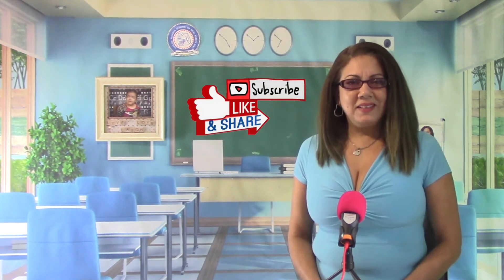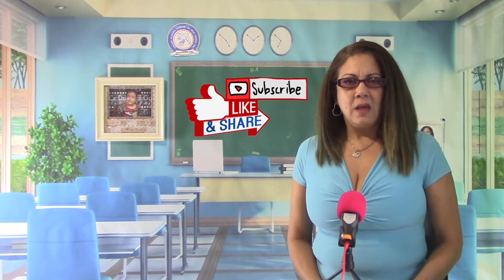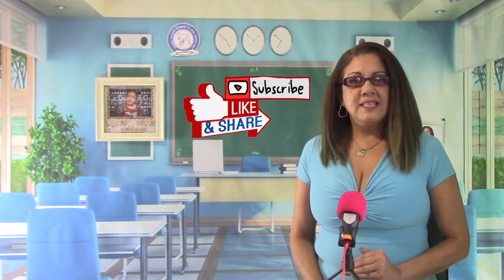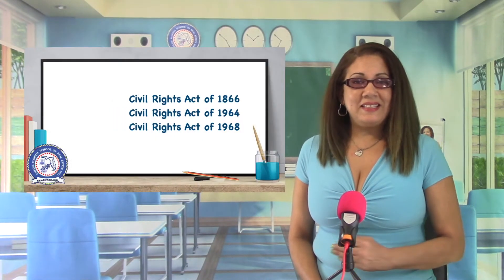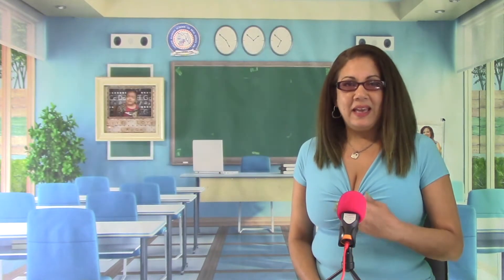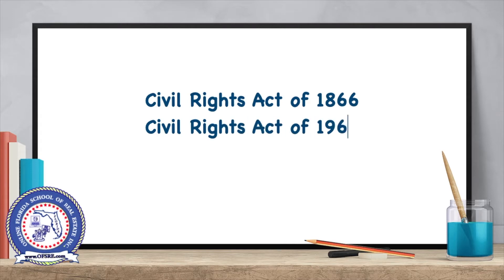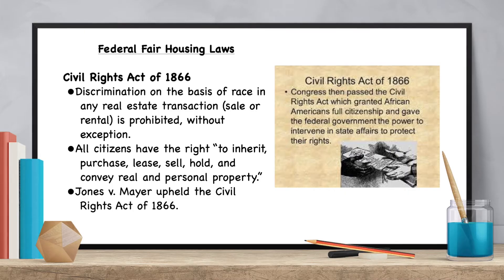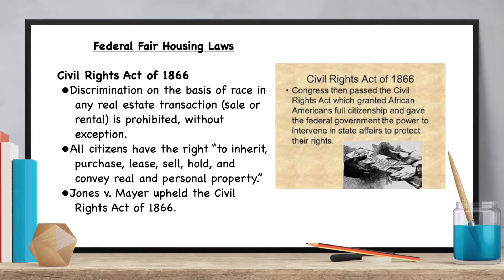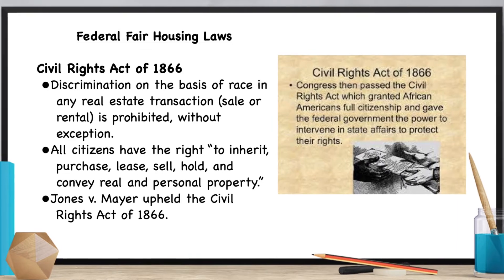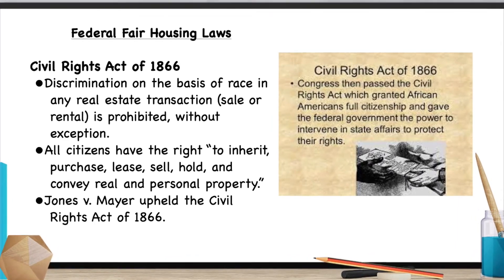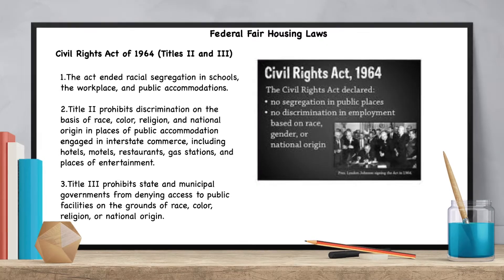First, we will review the Civil Rights Act of 1866, 1964, and 1968. The Civil Rights Act of 1866 prohibits racial discrimination in all real estate transactions — sale or rental — without exception.